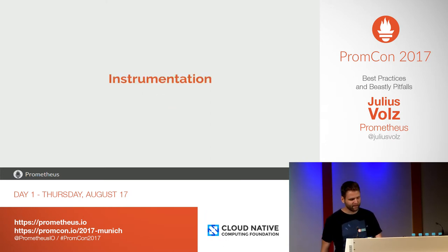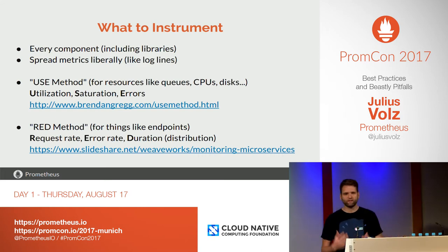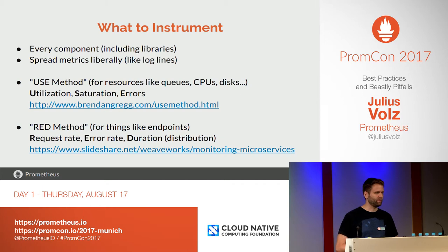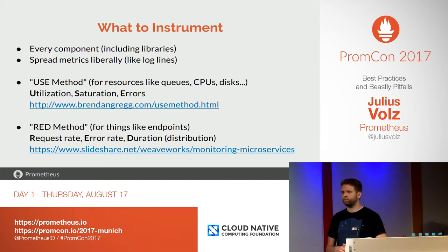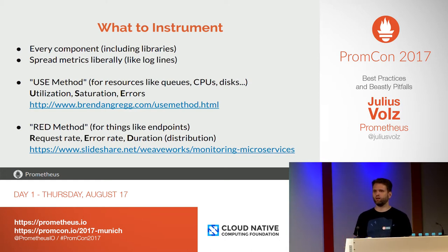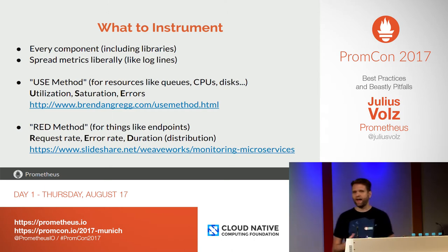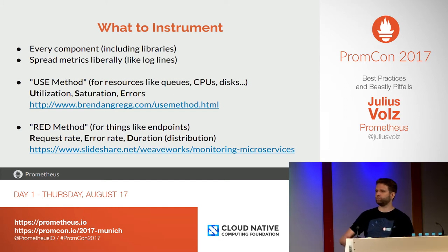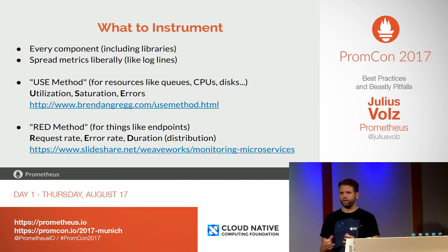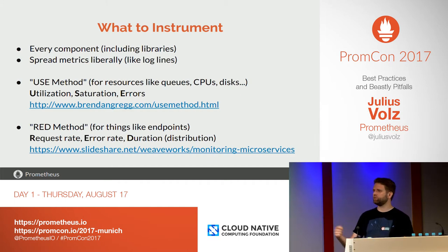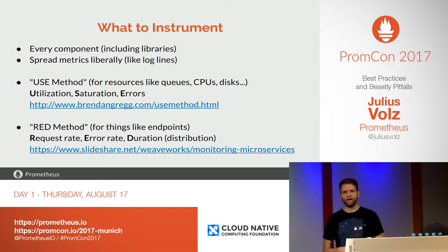I'll start pretty general with instrumentation — not really Prometheus-specific, but Prometheus is a very efficient metric storing system, and it's all about having good white-box instrumentation in your software. One big recommendation is to add metrics throughout all of your major components, including libraries that they use, so you don't have to wrap libraries with metrics. Spread metrics very liberally everywhere you would traditionally have had a log line. Just add a dimensionless counter — Prometheus is very good at handling big dimensional metrics, but the ones with no dimensions are so cheap. Just add them everywhere; it makes it easy to figure out how many times a certain error happened.